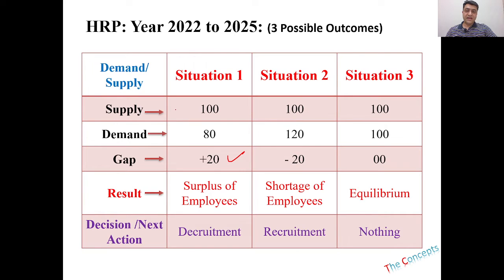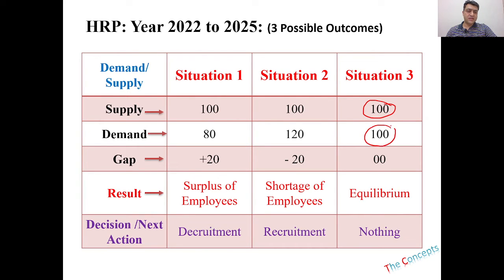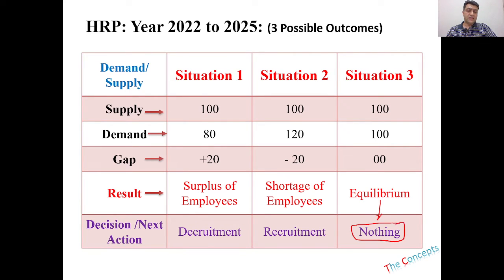In the second situation, supply is 100 people but you will need 120, perhaps because you are starting new projects. This means a shortage of 20 people. The third situation is where supply equals demand — 100 employees and you need 100. This is the equilibrium position, and if you are in equilibrium you don't need to take any action.